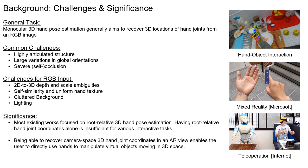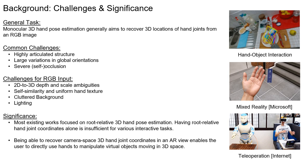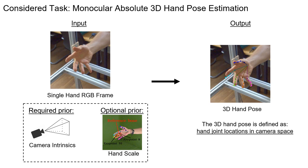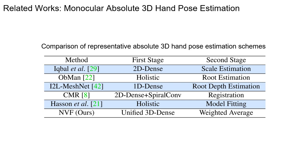For instance, being able to recover camera space 3D hand joint coordinates in an augmented reality view enables the user to directly use hands to manipulate virtual objects moving in 3D space. In this work, we consider the problem of camera space 3D hand pose estimation from a single RGB image, assuming that camera intrinsic parameters are available and 3D hand scale can optionally be used if provided.